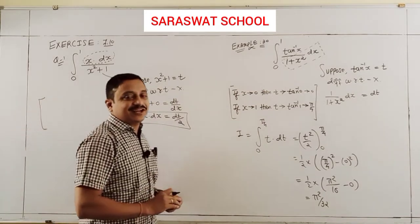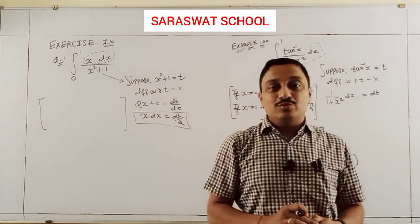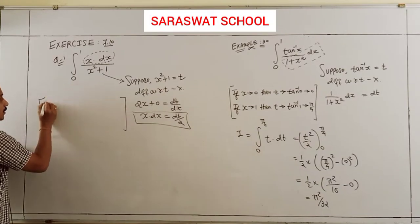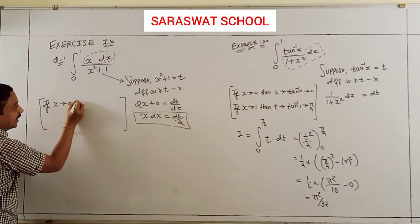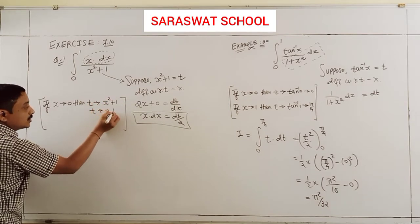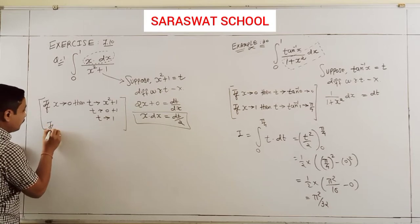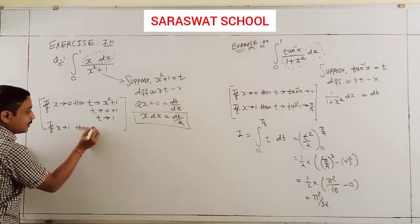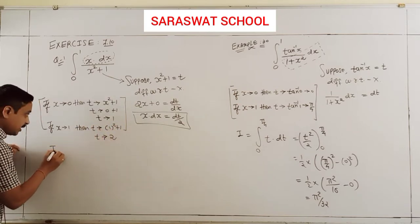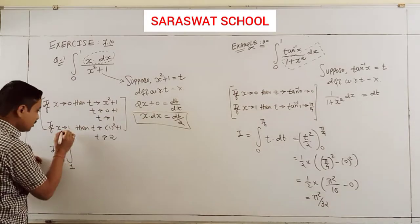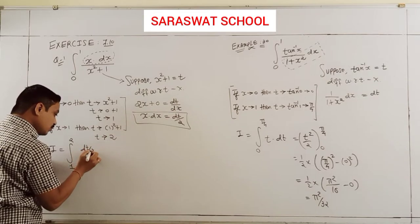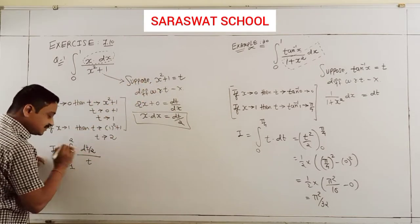But limit is necessary to change. According to the suggestion, you must change your limits. If x tends to 0, t tends to 0² + 1 = 1. If x tends to 1, t tends to 1² + 1 = 2. So my integration changes from 0 to 1 becoming 1 to 2, with dt/2 in the numerator and t in the denominator.